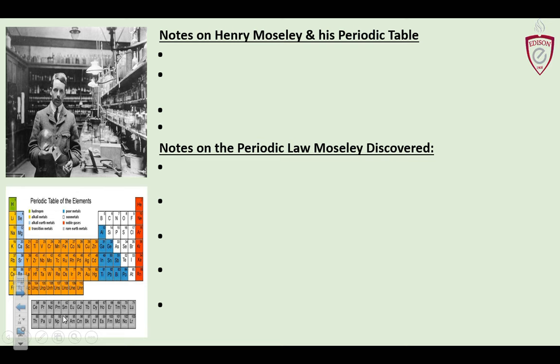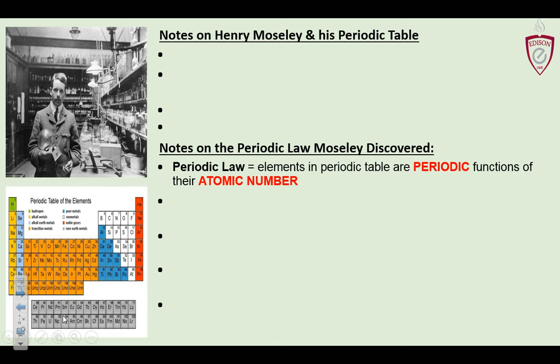Now let's talk about periodic law. Mendeleev arranged the periodic table; Moseley discovered the periodic law. Because of his arrangement he noticed not just the pattern of protons, but that elements behave a certain way because of how many protons they have — that's the periodic law: properties of elements are periodic functions of atomic number.